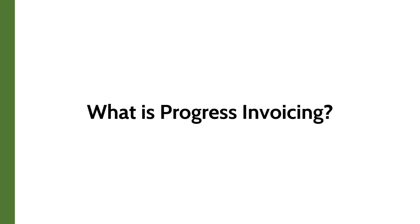So what is progress invoicing? Progress invoicing is simply the ability to create partial invoices from a single estimate. Think of it as a billing installment plan you typically see when an insurance company sends you a bill for your policy and gives you options to make payments on a monthly or quarterly basis.